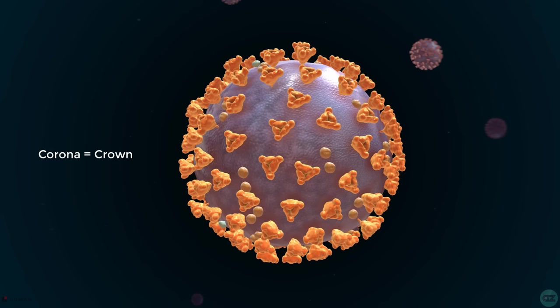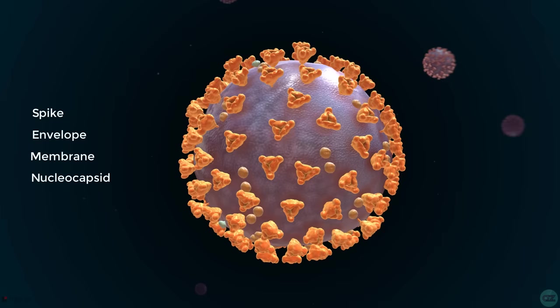There are four structural proteins, which are similar to other coronaviruses. The S, the E, the M and the N proteins. The S stands for spike, the E stands for envelope, the M stands for membrane and the N stands for nucleocapsid. So let's take a look at these different structural proteins in turn.